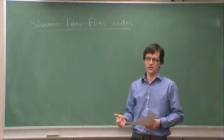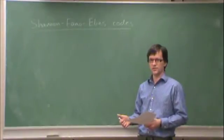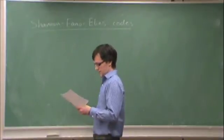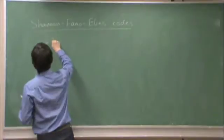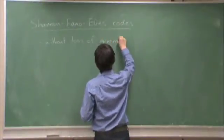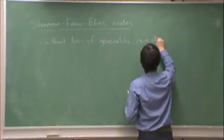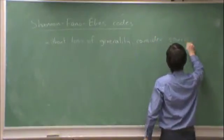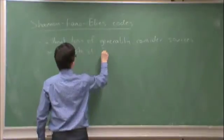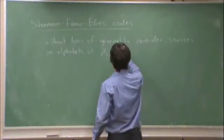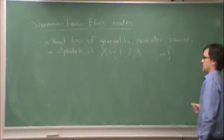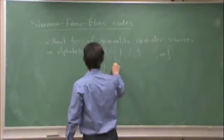So up till now we've generally been using the letters A, B, C and so on for source letters. Let's convert that. We're going to need to order the source letters, so let's talk about them as numbers. So let's let the source, without loss of generality, consider sources on alphabets of x equals 1, 2, 3, and so on, up to m, where m is the number of possibilities for the source. We're also going to consider that the encoding alphabet is binary.